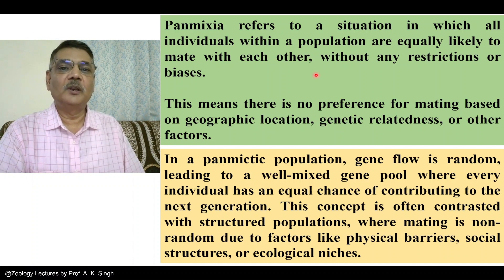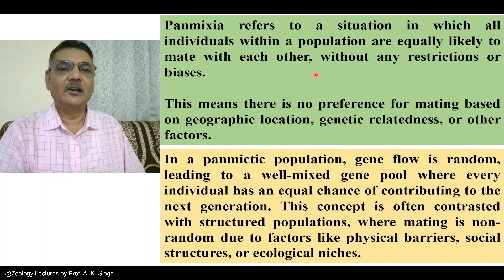One should know the meaning of panmictic or panmixia, which simply refers to random mating in a population. The population could be of plants, animals, fungi, or any other organism which is diploid and sexually reproducing.